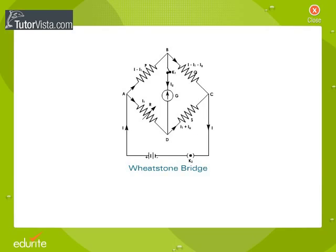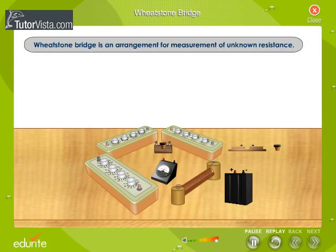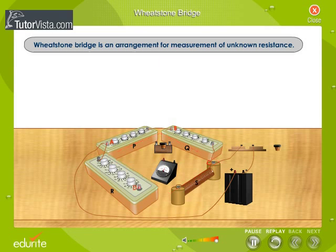A Wheatstone Bridge is an arrangement for measurement of unknown resistance. It consists of four resistors of resistances P, Q, R and S connected together to form a quadrilateral or bridge ABCD. The pair of opposite junctions B and D is connected through a galvanometer, and the other pair of opposite junctions A and C is connected through a battery and a key.